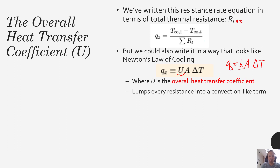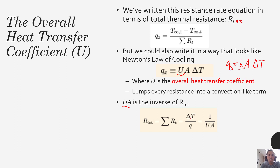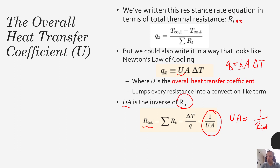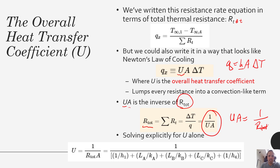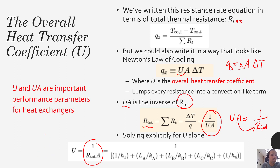This convention is used frequently for heat exchangers. UA — the overall heat transfer coefficient times the area — is just the inverse of our total thermal resistance, so UA equals 1 over R_total. If we wanted to solve for U by itself, we move A to the denominator. U has the same units as a convective heat transfer coefficient: watts per meter squared per Kelvin. This overall heat transfer coefficient is a very important term that you'll use a lot more when we're talking about heat exchangers.